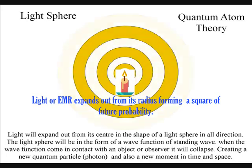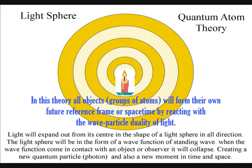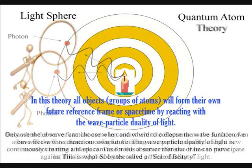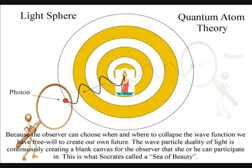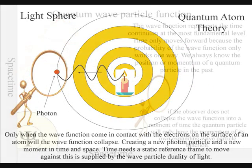We live in a dynamically evolving universe of continuous change because of the probabilistic nature of the wave-particle duality of light. Only if the light waves come in contact with an object will they form new photons of quantized energy that will have a unique position in space and time.